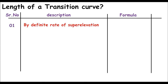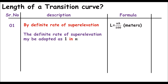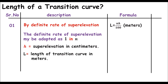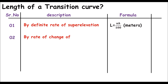Method number one is based on the rate of super elevation. We can determine the length of the transition curve using the formula: L = N × h / 100. This gives us the length of the transition curve in meters. The rate of super elevation may be adopted as 1 in N, where H represents the super elevation in centimeters and N represents the ratio used in the rate.